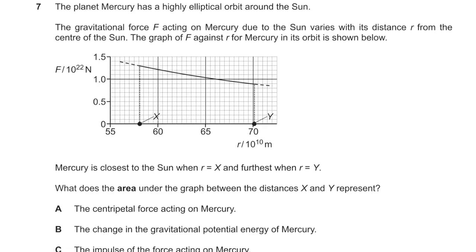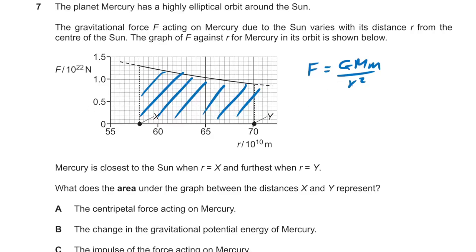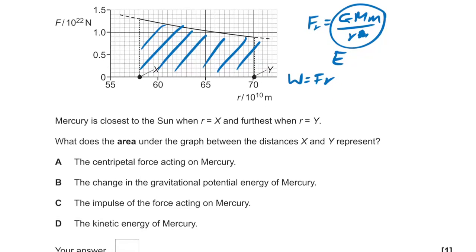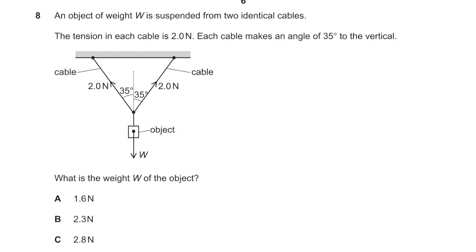Question 7: planet Mercury going around the sun elliptically. We have a force-against-distance graph. What does the area under the graph between distances x and y represent? We know F = GMm/r². The area under the graph means F × r, which gives GMm/r — that's energy. Work done = F × d, so the area gives a difference in energy. The answer is B: change in gravitational potential energy of Mercury.